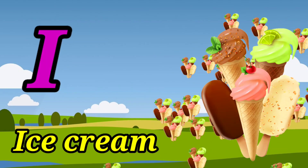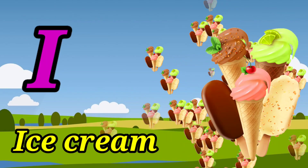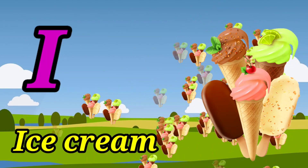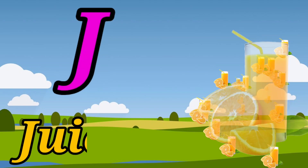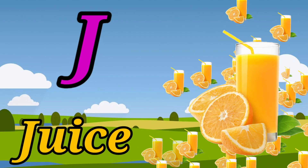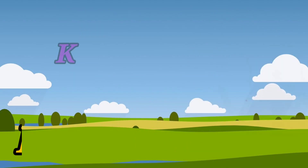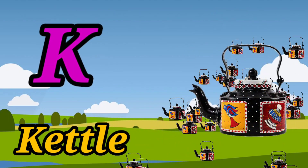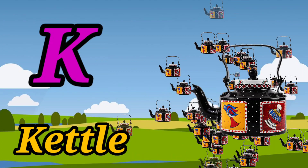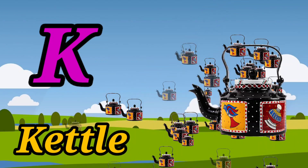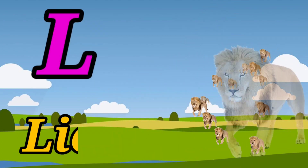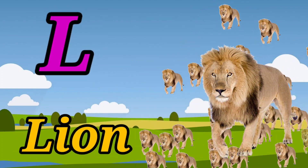I for ice cream, J for juice, K for K3, L for lion.